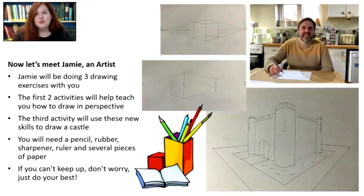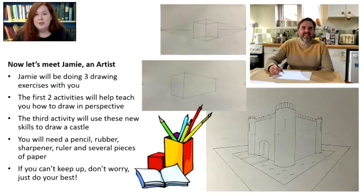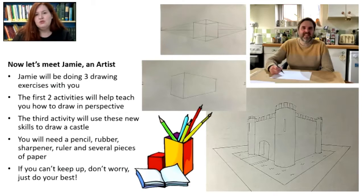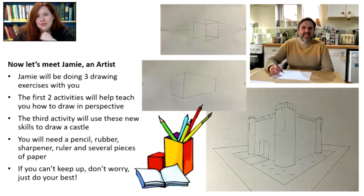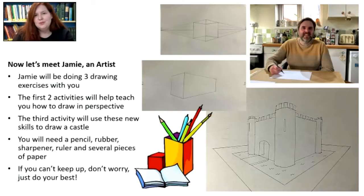We're now going to move on to the drawing activity. You're going to need your paper, pencil, ruler, sharpener and rubber. We're going to be playing you three videos, each with Jamie, an artist who will be teaching you how to draw in perspective using what he calls two-point perspective. He's going to start by showing you how to draw a cuboid, then a very solid rectangle, and finally using those skills to draw a fantastic castle. Don't worry if you can't quite keep up — do your best, have a go, take your time. Here's the first video.